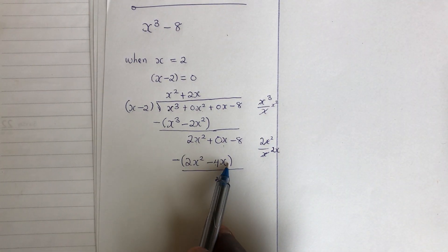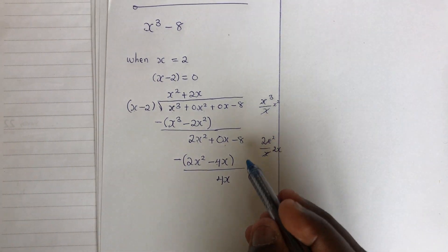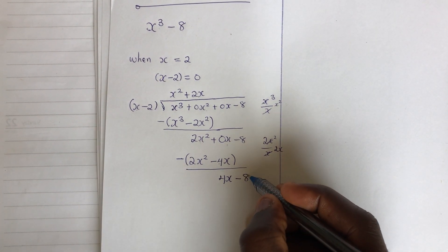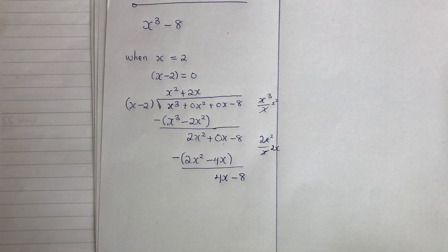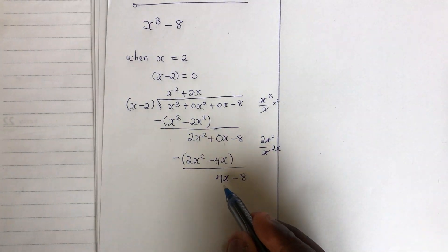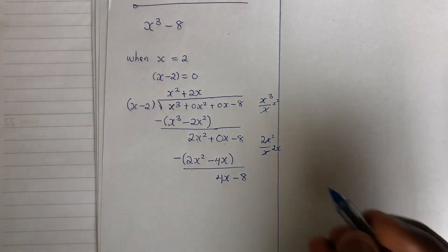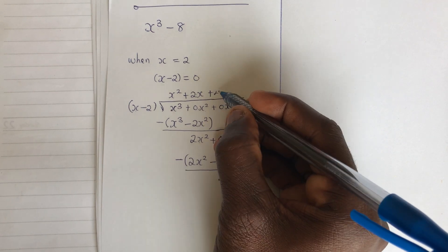Now, there is no term here which is a constant for me to work with this. So I am done for this step. I will just bring my negative 8 here. This is what I have. Now, I need to start all over again. 4x divided by x. The result is 4. So I will go here plus 4.